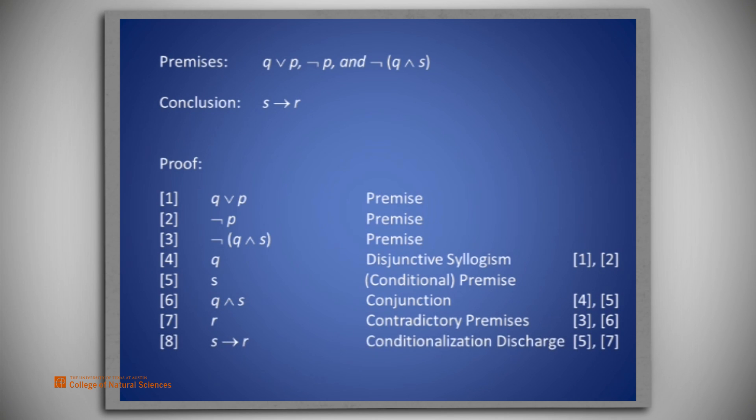We remove it from the set of premises and use it as the antecedent in an implication. Line 8 shows the discharge of the conditional premise S implies R. We say, using conditionalization discharge from lines 5 and 7, we have S implies R. This concludes the proof.